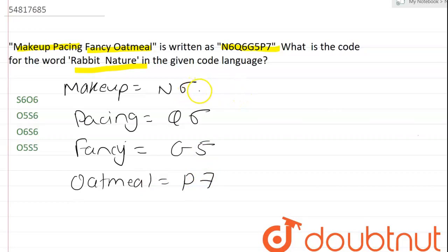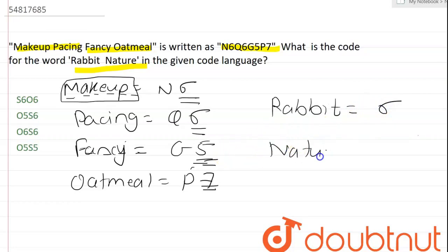Let's first see about the numbers 6, 6, 5, 7. These numbers represent the letters contained in each word. Makeup has 1, 2, 3, 4, 5, 6 letters. Pacing has 1, 2, 3, 4, 5, 6. Fancy has 5 letters. So for rabbit, the total number of letters in this word is 6. And in nature, the total number of letters is also 6.